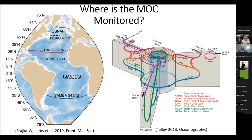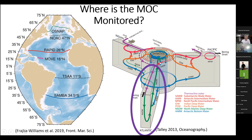There are a few other arrays that have since been put in place: SAMBA at 34.5 South, OSNAP at around 47 North, and a couple others that have been operating on and off — all of them just a few years old. The Atlantic is covered by a few of these, though not all years and not certain how long they'll last. Here's a schematic of the global meridional overturning circulation in 3D. This is the Atlantic part, but of course we have the Indian Ocean, Pacific Ocean, and Southern Ocean — they're all interconnected with this global cell, often envisioned as a figure-eight through 3D space. We are only monitoring continuously or semi-continuously in the Atlantic, so we need to do better.